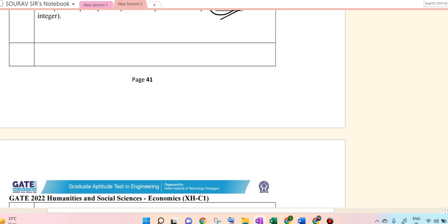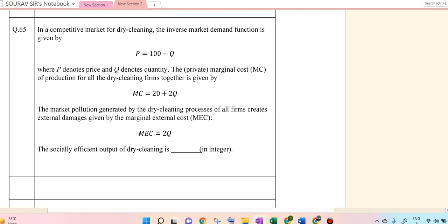So here we go. Last question, 65. In a competitive market for dry-cleaning, the inverse demand is P equals 100 minus Q, where P and Q denote price and quantity. The private marginal cost of production for all dry-cleaning firms together is given by MC equals 20 plus 2Q. The market pollution generated by the dry-cleaning process of all firms creates external damages given by MEC equals 2Q. What is the socially efficient output of dry-cleaning? Let me just draw the basic diagram here.